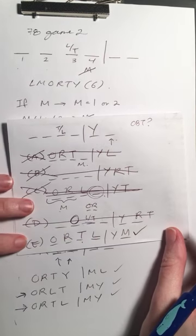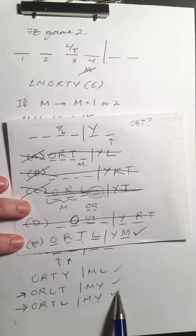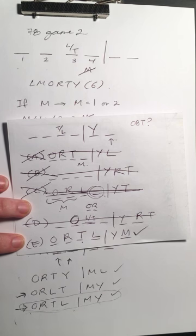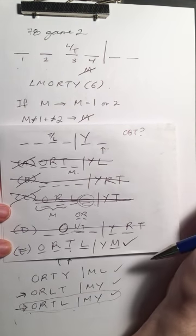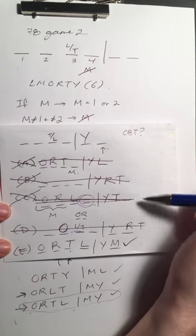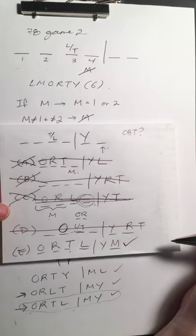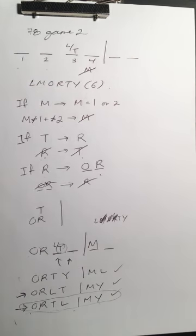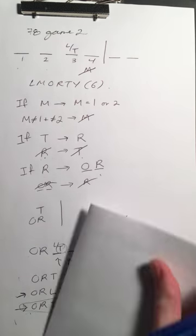It took a while to get there, but E is definitely possible — we actually have it as an acceptable solution in our bank. If Y is not assigned, it's possible for L to be in 1924. You could also check the solution bank, but if you're really struggling, doing process of elimination — even when the answer is E — at least lets you feel confident as you apply the rules one by one.